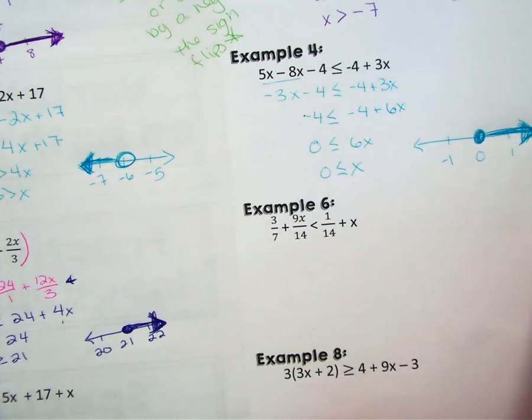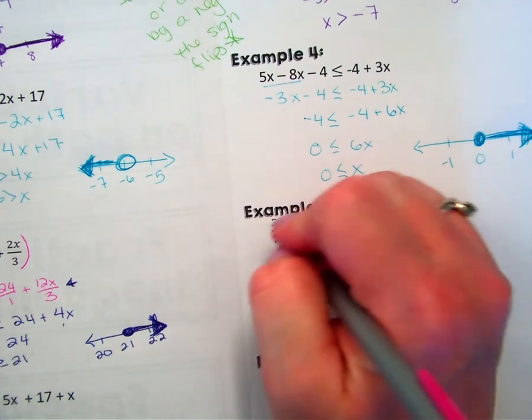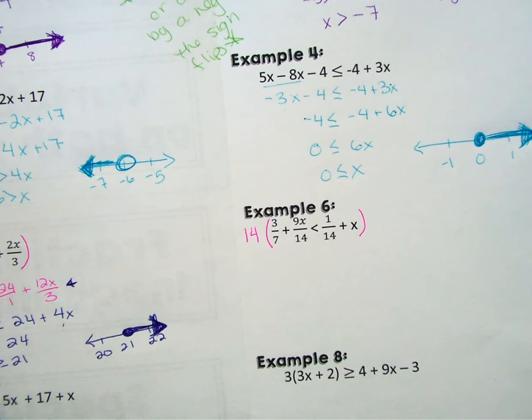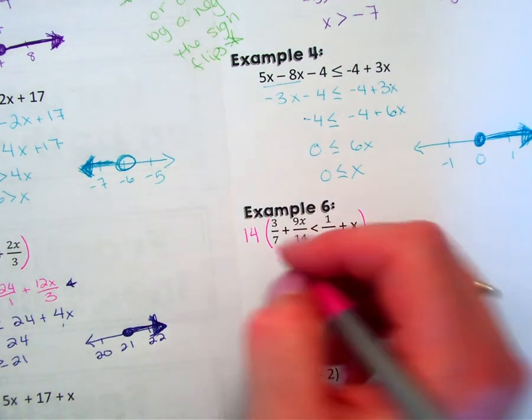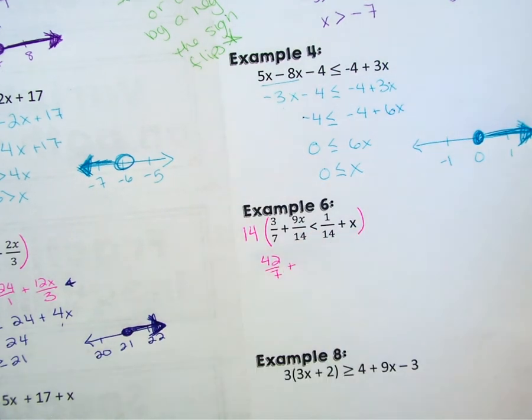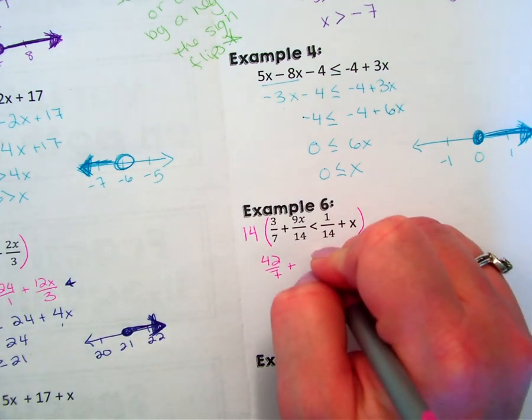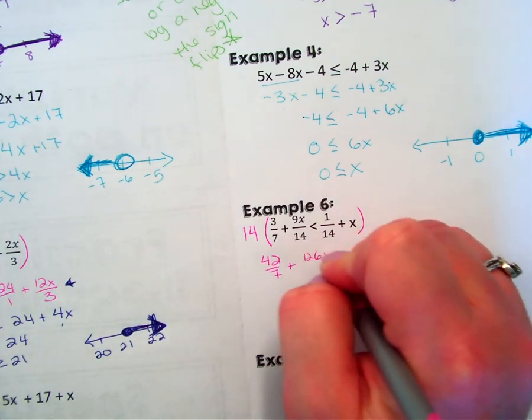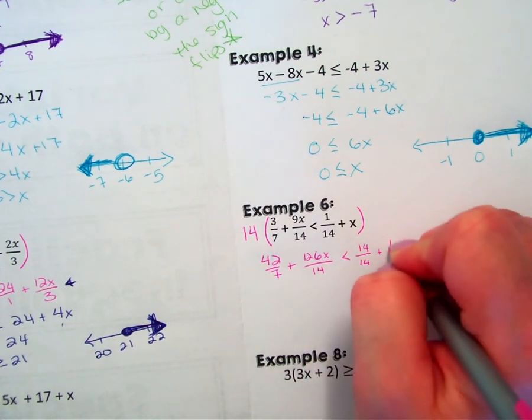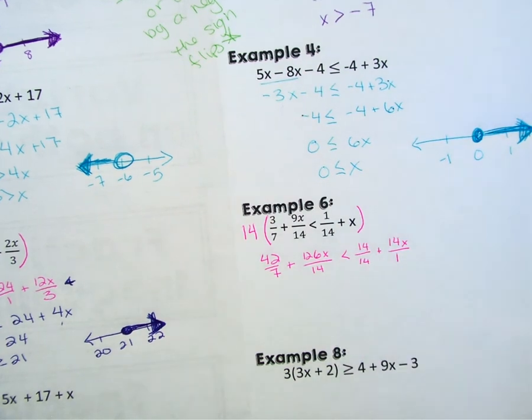Example 6, same thing. We got some fractions, so I'm going to multiply everything by 14, because between a 7 and a 14, common denominator is going to be 14. So again, I'm going to show that step I don't always show. So 14 times 3, it'll be 42 over 7. 14 times 9, really going to push my healthy brain right now, 6 carry the 3, 126 over 14. That's going to be 14 over 14 plus 14x over 1.